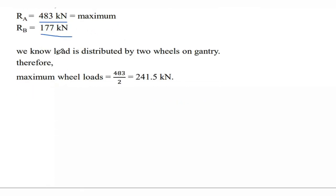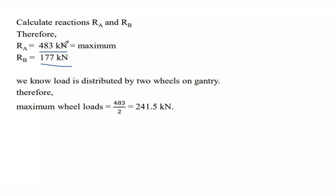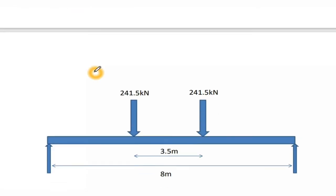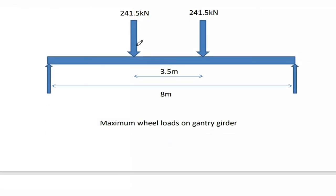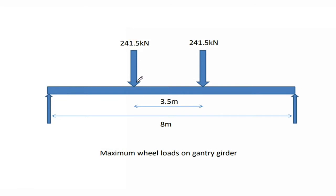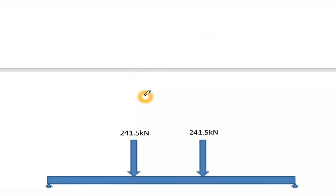Since the load is distributed by two wheels on the gantry, the maximum wheel load from the crane is 483 / 2 = 241.5 kN.